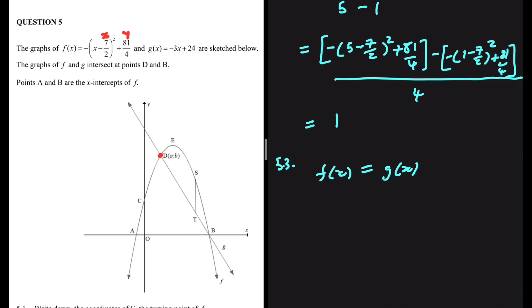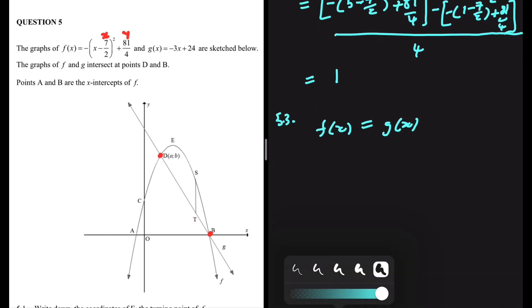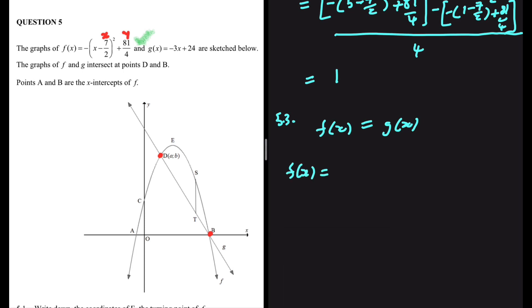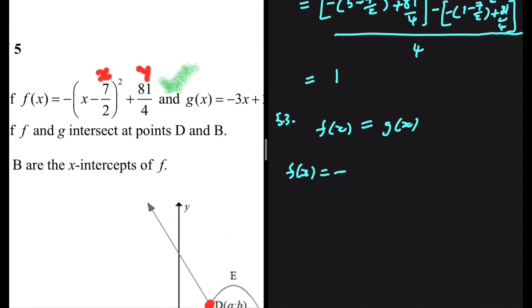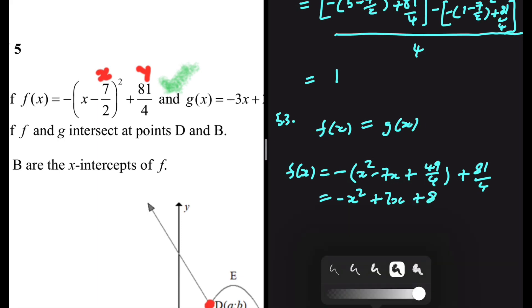The two functions touch at D and B, so we'll get the X values of both after solving for X. First, let's expand F of X into standard form. F of X equals minus X squared plus 7X plus 8 — since X times X is X squared, X times minus 7 over 2 doubled gives minus 7X, and minus 7 over 2 squared is 49 over 4, plus 81 over 4, giving minus X squared plus 7X plus 8.